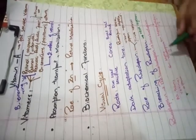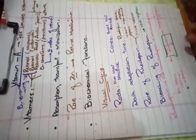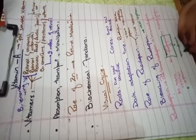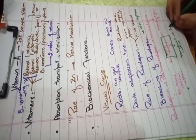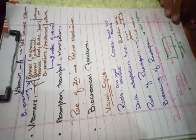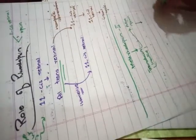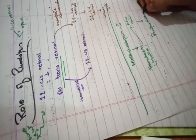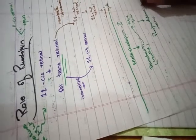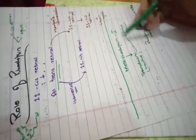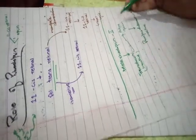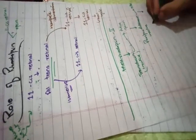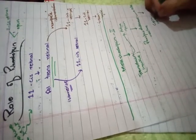An important point is that at the meta-rhodopsin 2 stage, it activates transducin from inactive to active form. Active transducin then activates phosphodiesterase from inactive to active form. Active phosphodiesterase converts cyclic GMP into simple GMP, causing the sodium channels to close, calcium levels to drop, and the signal to be propagated.